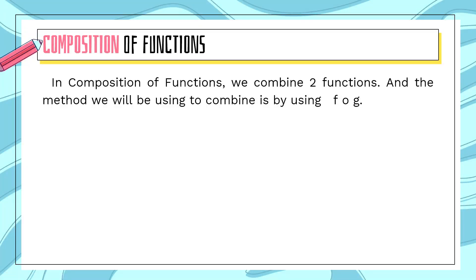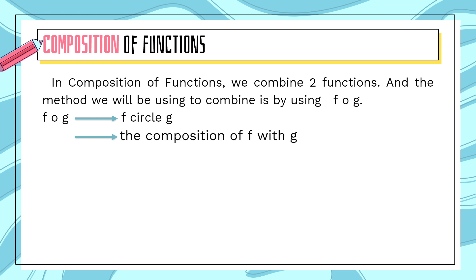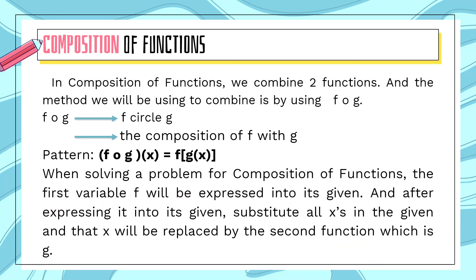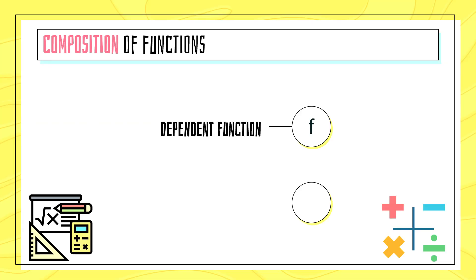In composition of functions, we combine two functions, and the method we will be using is f circle g, or the composition of f with g. When solving a composition of functions problem, the first function f will be expressed into its given, and after expressing it, you find how many x's are in the given — that x will be replaced by the second function g, wherein f is the dependent function and g is the independent function.